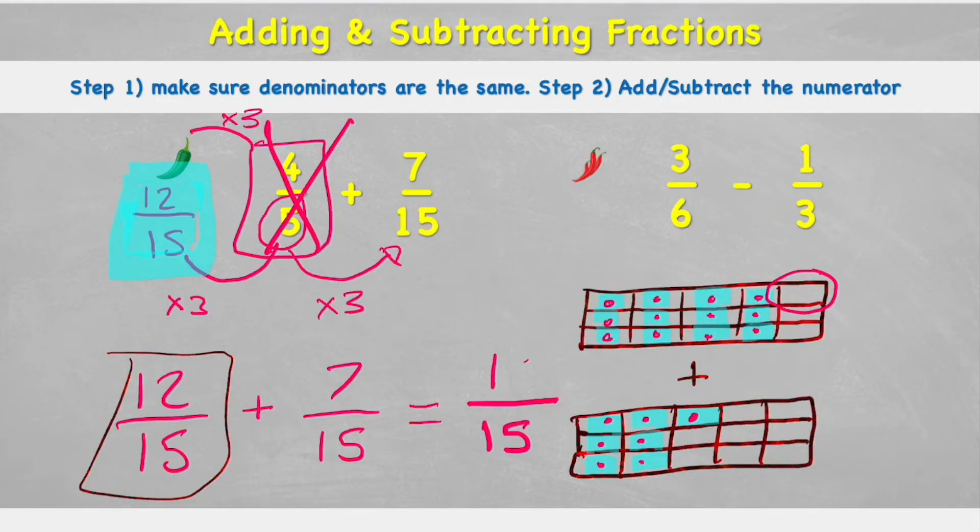So my answer is I have 19 fifteenths. Or what I could have done is just looked at my step two where it said add and subtract the numerator. So if I look back to my question just here and see my numerator 12 added to my numerator of 7, that equals 19. So I didn't actually need to draw this representation, I could have just added my two numerators together.